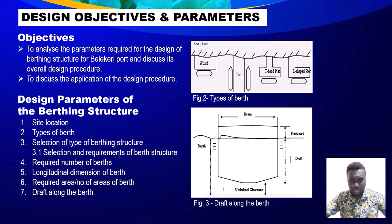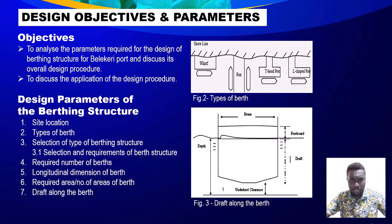First is the site location. Factors like easy access for ships, meteorological and wave hydrodynamic conditions must be carefully assessed. Second is the types of berths. This is very important and there are two types. One is what we call a wharf, which is parallel to the shoreline, and number two is the pier, which is perpendicular to the shoreline, as you can see in Figure 2.